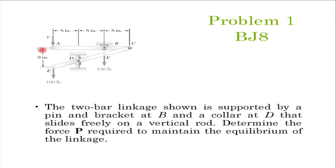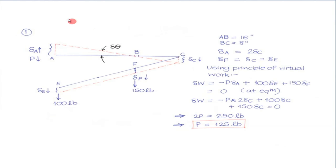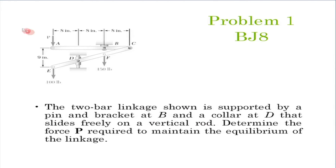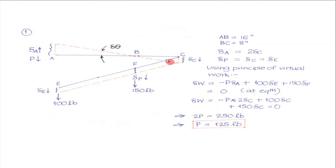Suppose ABC and EDFC were not connected to each other — then this clearly becomes a mechanism, because free rotation for member ABC is possible about joint B. So we give it a rotation delta theta. But because these two are connected, this joint will open up if we give it a virtual rotation of delta theta. Point C will move exactly downwards and point A will move exactly upwards, because it has to move perpendicular to the line joining A and B. We are rotating about point B, so A moves exactly upwards and C goes down.